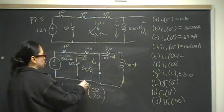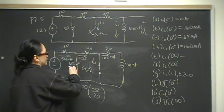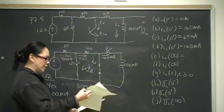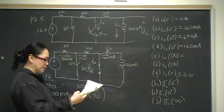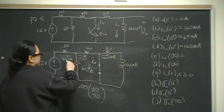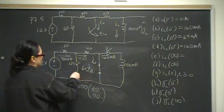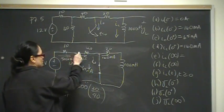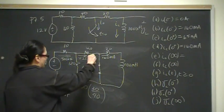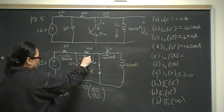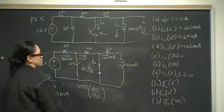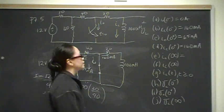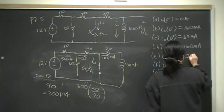For the current through the switch at time infinity: the switch current of 225 milliamps will gradually build up as the inductor current decays, and at time infinity the full 225 milliamps will be flowing through the switch.